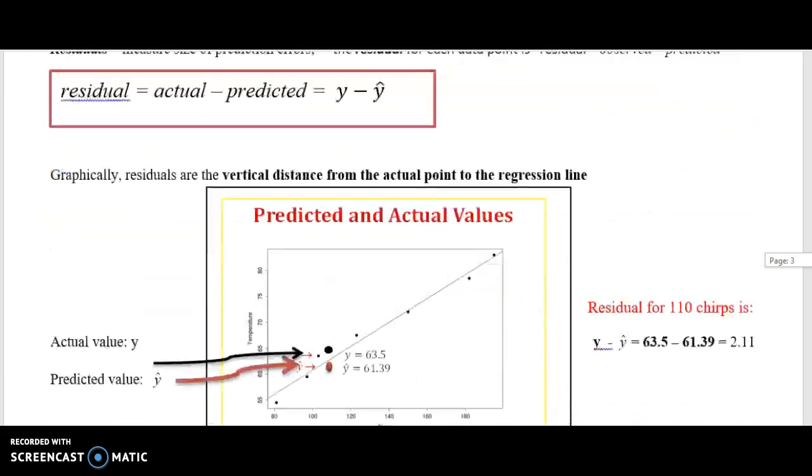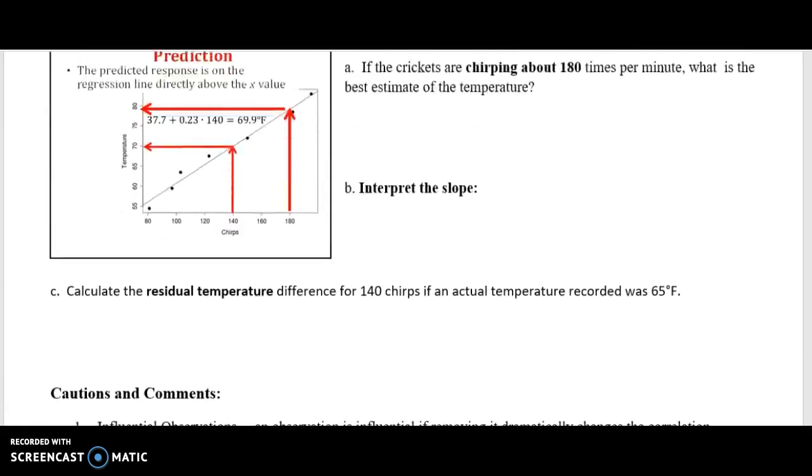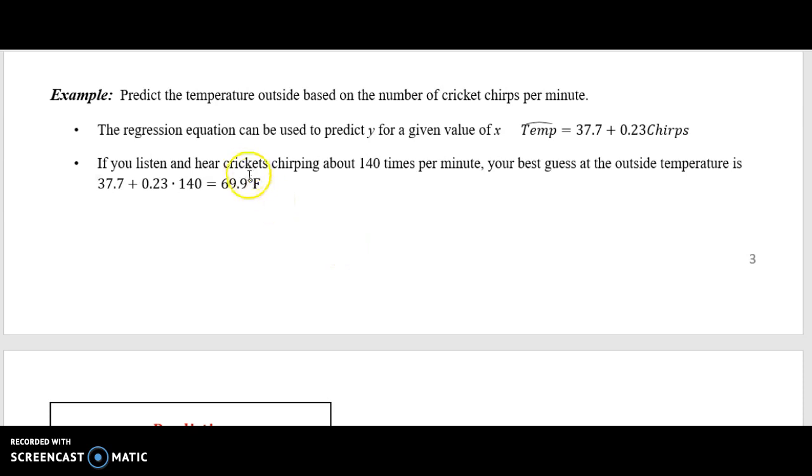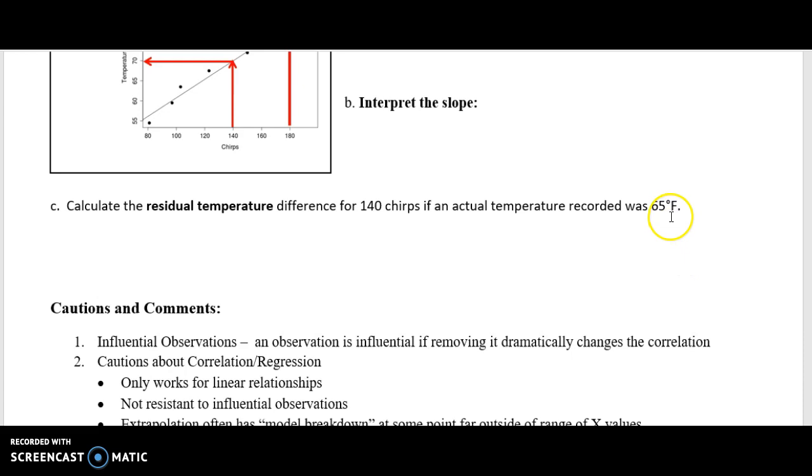If you look at the solutions, all of that is written out for your answer for part B. Finally, calculate the residual temperature difference for 140 chirps if the actual temperature recorded was 65 degrees. Remember, residual is actual minus predicted. The actual is given to you at 65. Your predicted was calculated right here at 69.9. So you're going to take 65 minus 69.9, and yes, you can have negative values for your residuals.